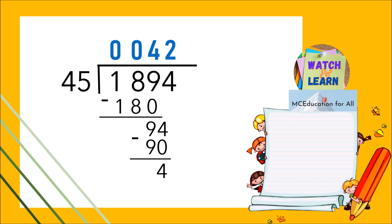Thus, the quotient of 1894 divided by 45 is 42 remainder 4.